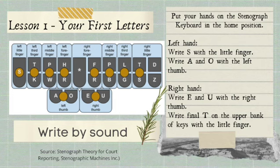In the Stenograph machine, or in steno, we write by sound. Lesson 1, our first letters: we have initial S, vowels A, O, and then vowels E, U, and then final T. So put your hands on the Stenograph keyboard in the home position. Using your left hand, you write initial S with the little finger.